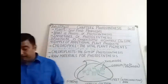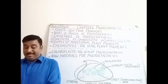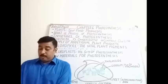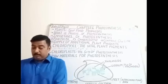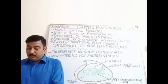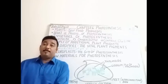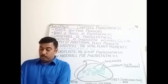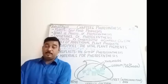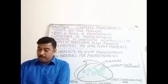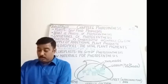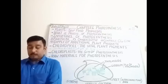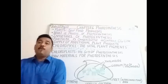Chlorophyll is a highly complex substance composed of carbon, hydrogen, oxygen, nitrogen, and magnesium — these are the constituent elements. Chloroplasts are mainly contained in the mesophyll cells, which are present in the leaves, located between the palisade and spongy cells of the leaves. In between those cells, the mesophyll cells are present, and the chloroplasts are located there.